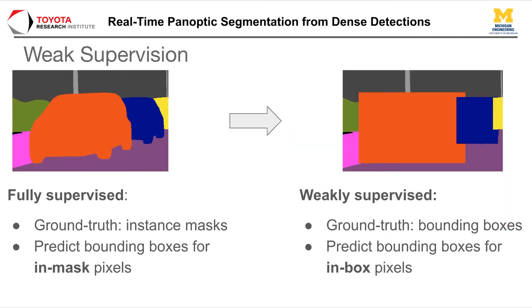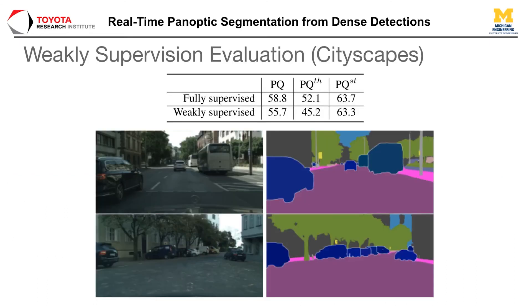Our model can also be easily used in a weakly supervised manner when ground truth instance masks are not available. In the weakly supervised case, we relax the target assignment in object detection such that we train the model to predict spanning boxes for in-box pixels. The model trained is able to get 95% of the performance of the fully supervised version on Cityscapes, which is better than some fully supervised methods.